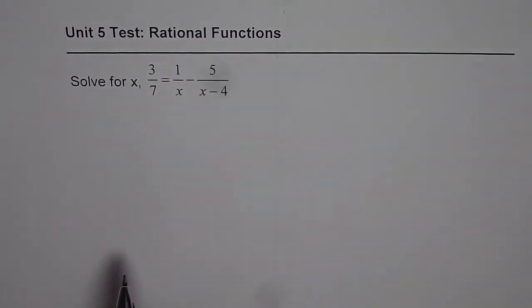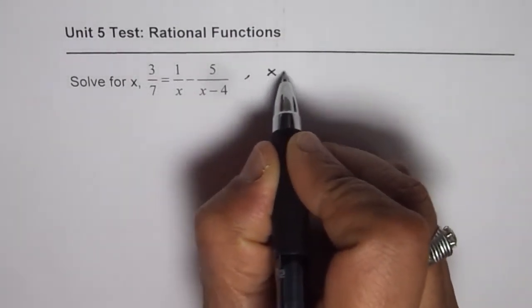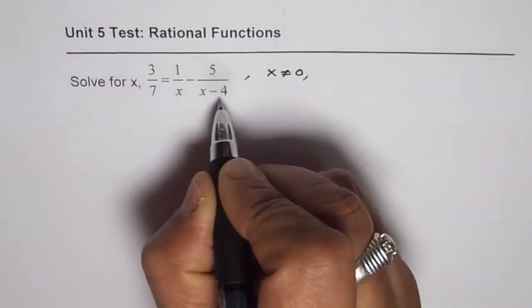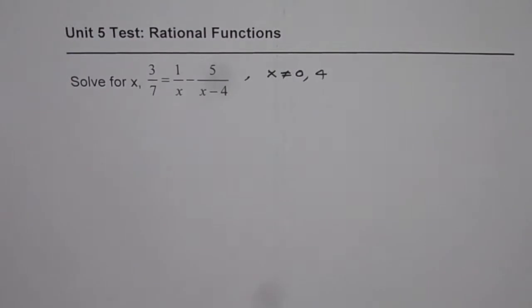Whenever you have a rational equation, begin by writing its restriction. x is not equal to 0 and is also not equal to 4. These are the two restrictions for the given rational function.